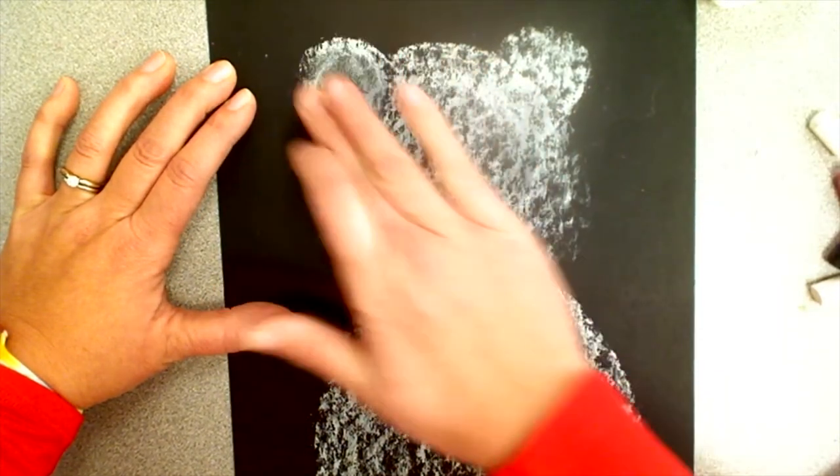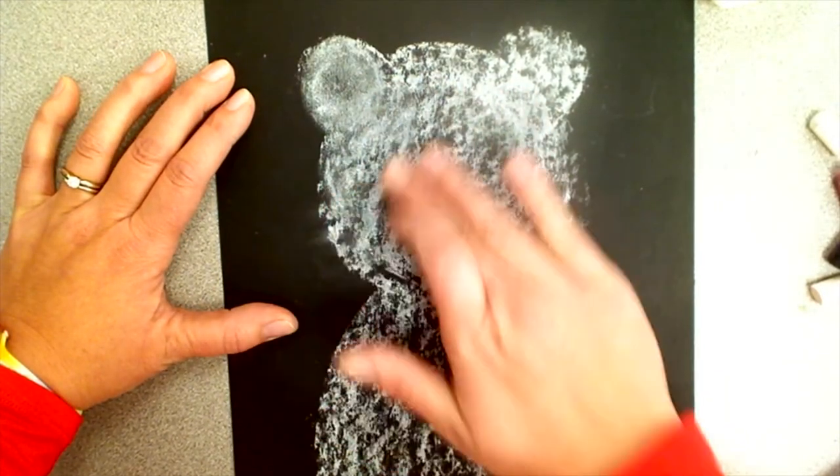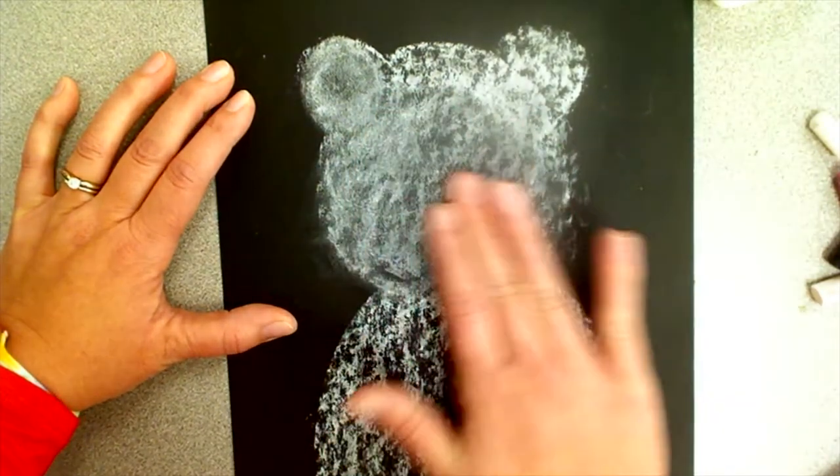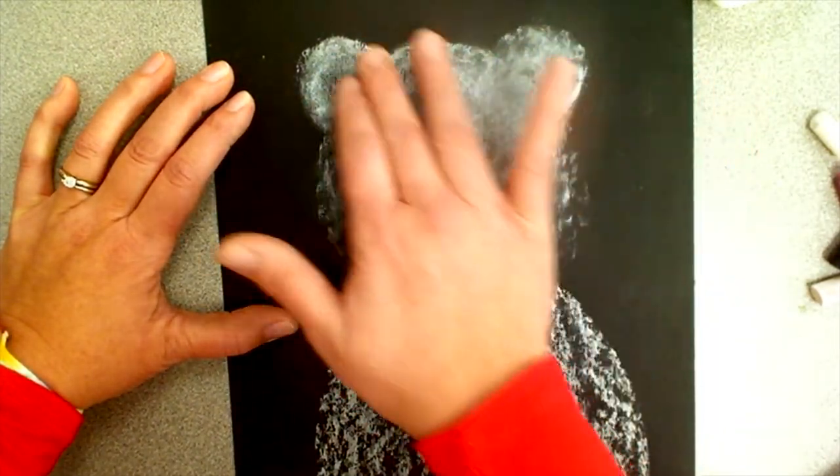When you're done with the chalk, use your fingers and smear the chalk. This will make him look nice and fluffy and soft.